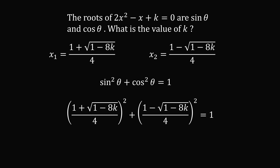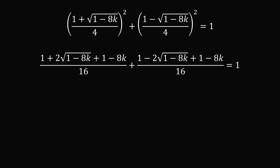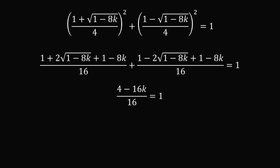We sum the squares of the two roots and set that equal to 1. Squaring the first term gives 1 plus 2 times the square root of 1 minus 8k plus 1 minus 8k, all over 16. Adding the square of the second term gives 1 minus 2 root of 1 minus 8k plus 1 minus 8k, all over 16, and this equals 1. The radical terms cancel out, leaving 4 minus 16k over 16 equals 1.